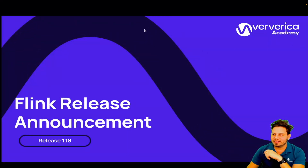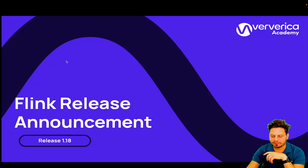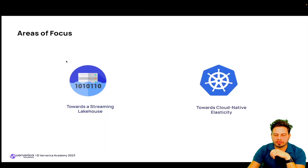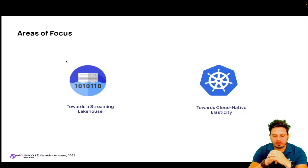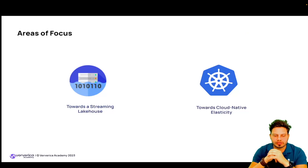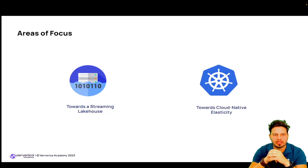Hello everyone, this is Yanis with Viverica, and I'm here to tell you all about the Flink 1.18 release. According to the Flink roadmap, there are two main areas of focus: the first one is around moving Flink more towards the streaming lakehouse, and the second one is about moving towards cloud native elasticity.